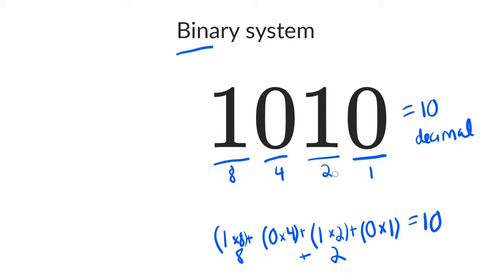In the decimal system, each of these places represented a power of 10. But in the binary system, each place represents a power of 2. The first bit is 2 to the 0 power, that's 1.